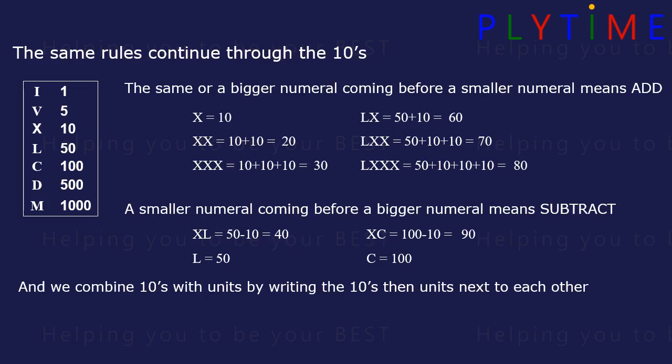We combine tens with units by writing them next to each other. For example, 35 is XXX (10, 10, 10) and V (5). 69 would be L for 50 and X for 10, then IX for 9. That's 50 plus 10 plus 9.